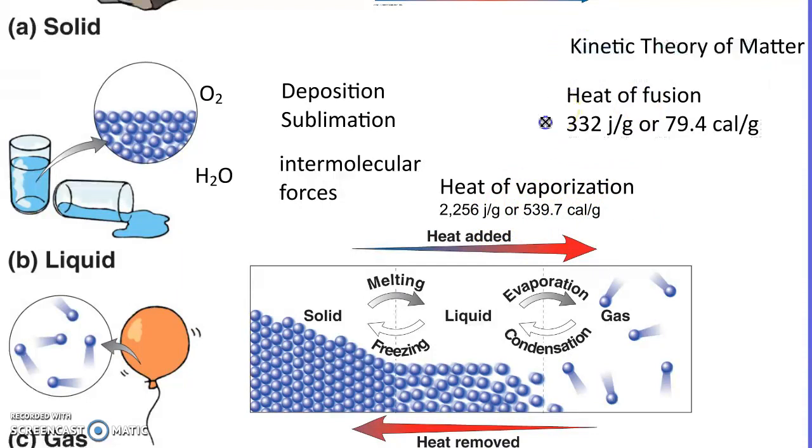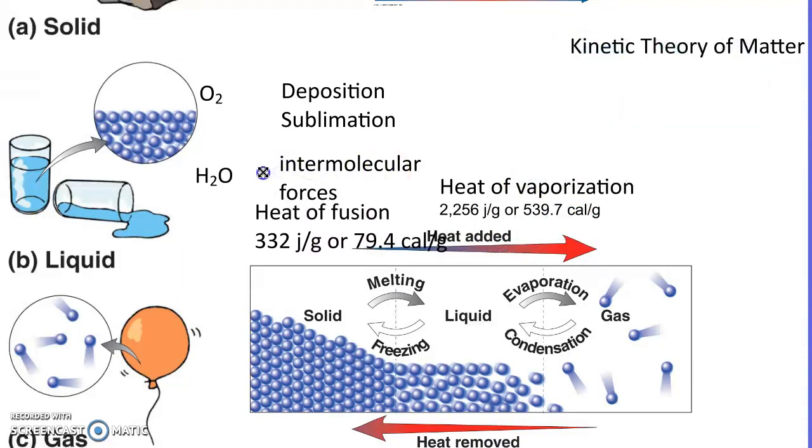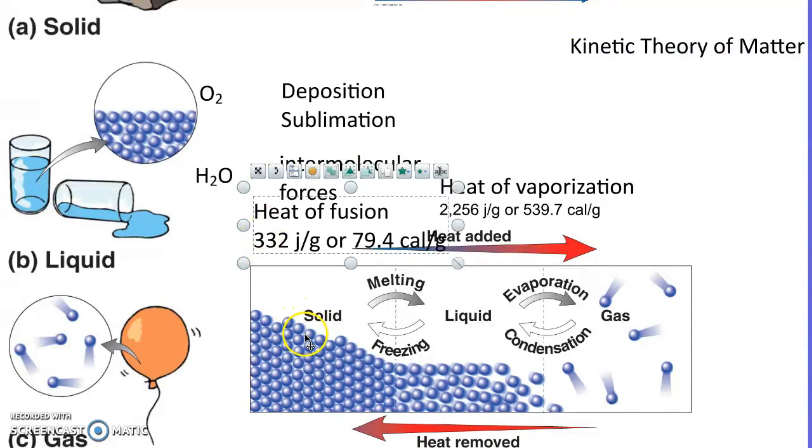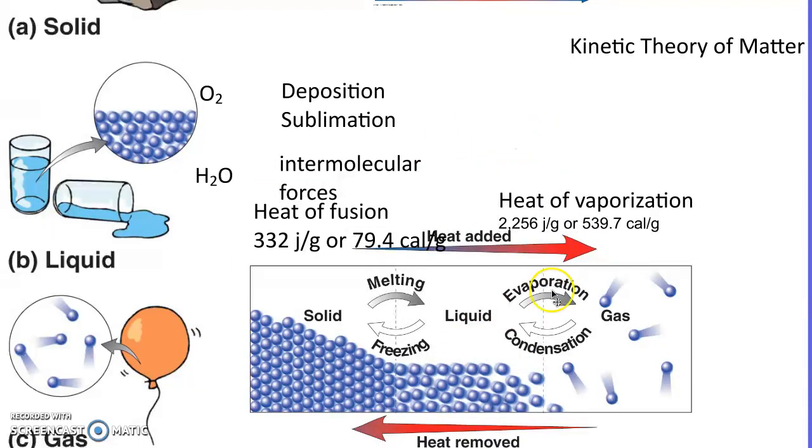If a solid would have to gain the heat of fusion in order to become a liquid, a liquid would have to lose that much heat in order to become a solid. The same thing over here with heat of vaporization - a liquid would have to gain that much heat, a gas would have to lose that much heat. If you had water vapor in the air, it would have to lose this much heat before it could become a liquid and condense on the outside of your glass.